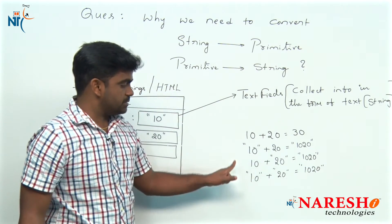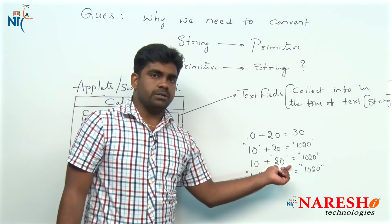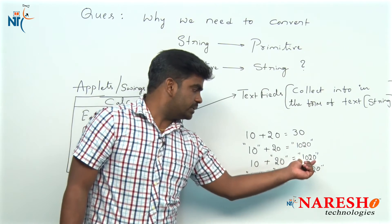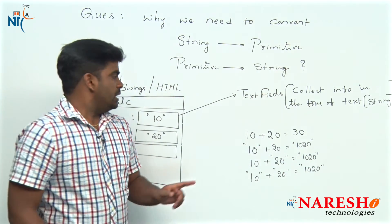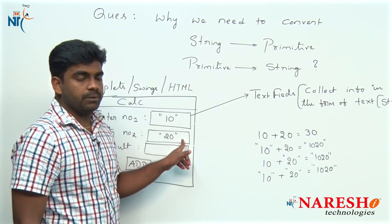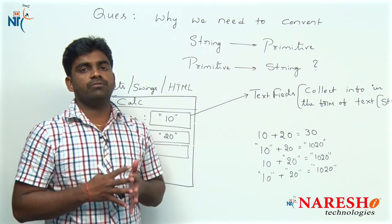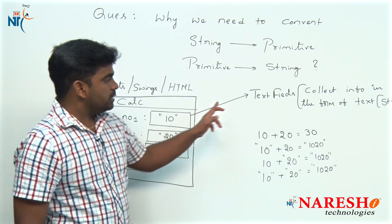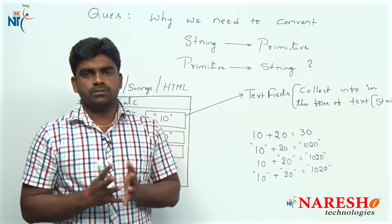In all remaining cases — whether both are strings, the first is a string, or the second is a string — in all three situations the result will be a string only. That is why we cannot perform the addition operation on these two values 10 and 20. This is the problem. So we need to first collect the information in the form of strings — we cannot do anything about that.